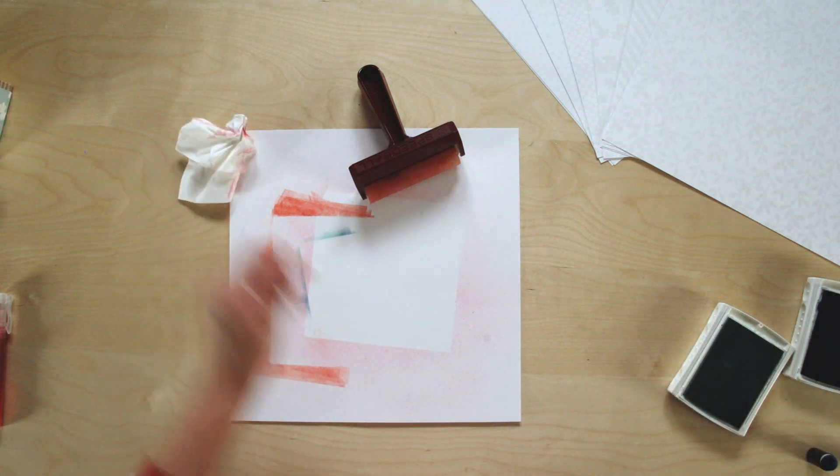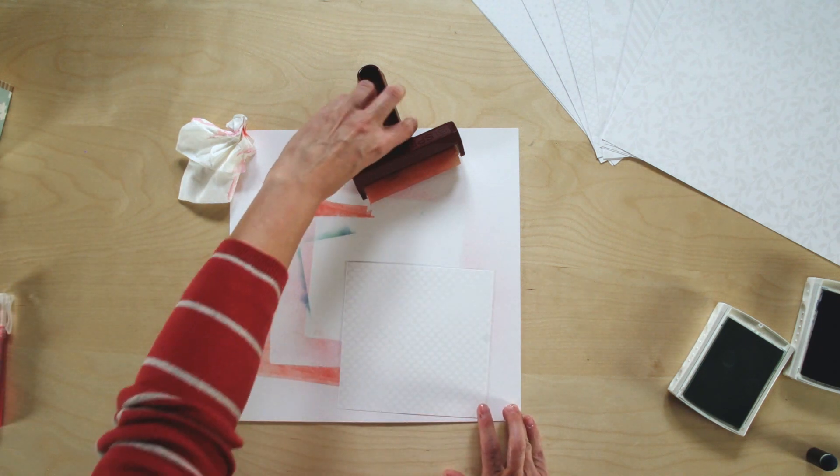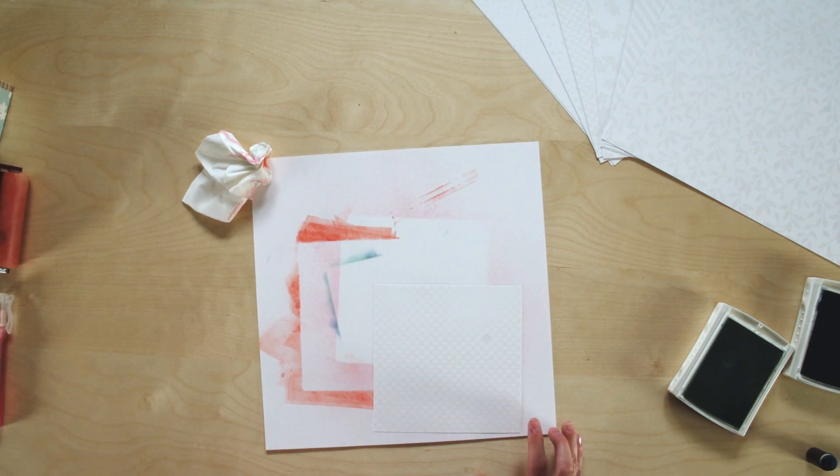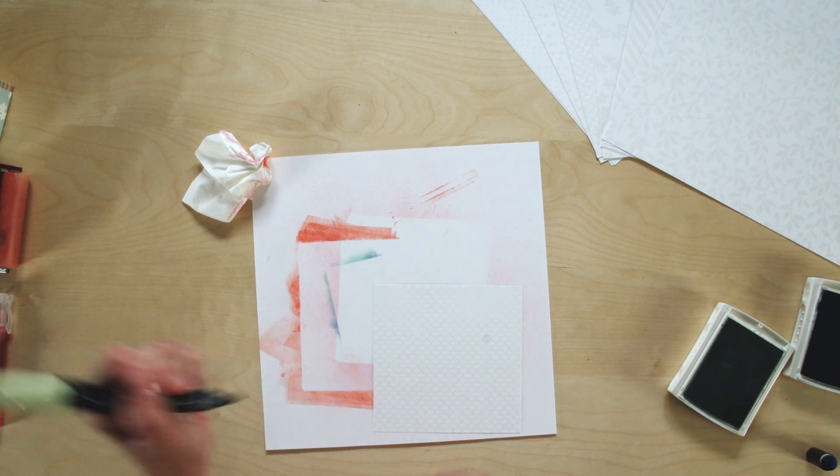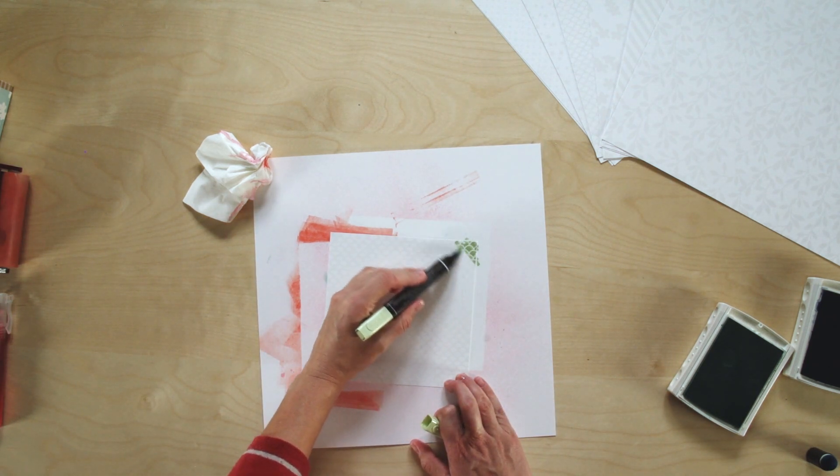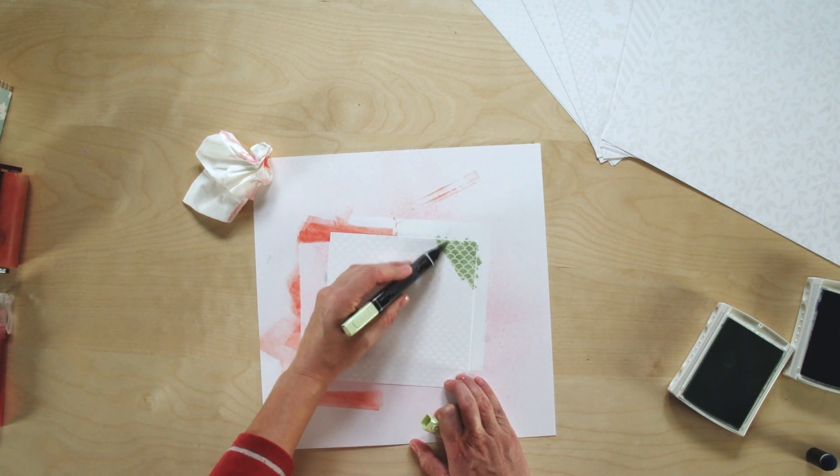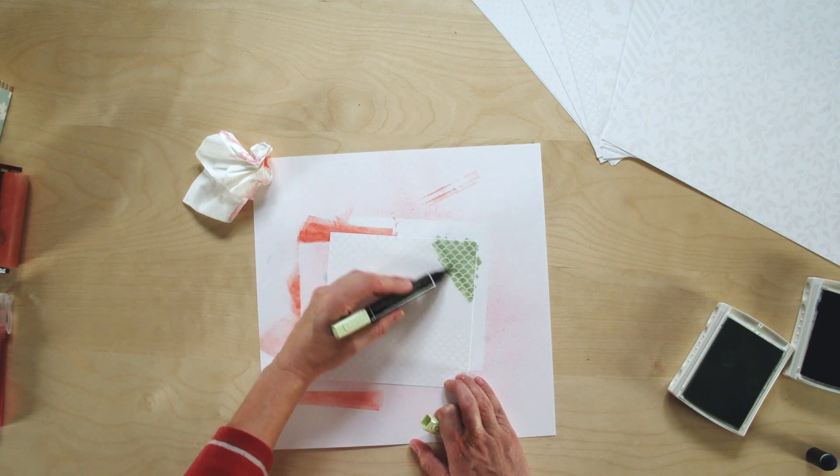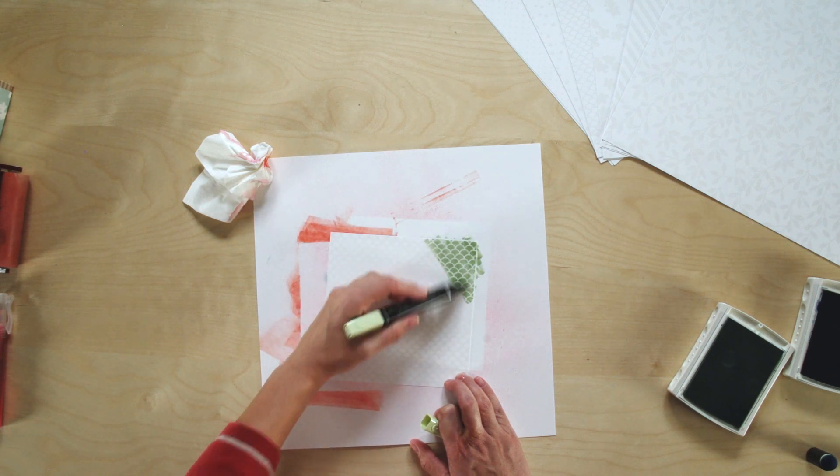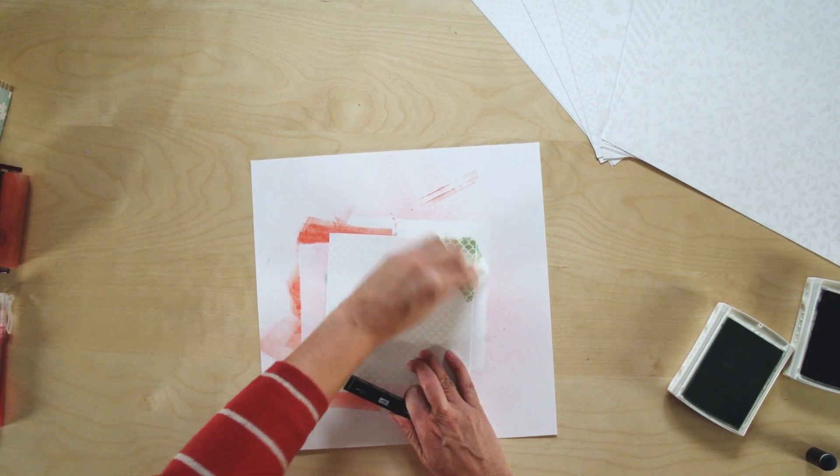And then I'm going to show you one more way really quick, and that is with using our Blendabilities. Blendabilities is super simple. You'll just take your Blendability marker and just color directly on that paper, and you can see how that will just start to reveal the pattern. And same as you've done with all the others with our tissue, we'll just wipe off that excess.